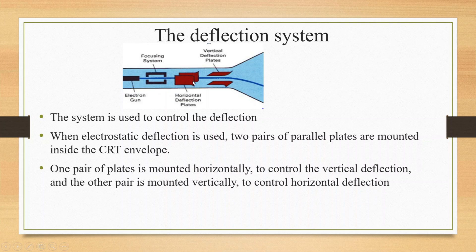Horizontal deflections are controlled by the vertical plates. So in the deflection system: one pair of plates is horizontally arranged to control vertical deflections, and one pair is vertically arranged to control horizontal deflections.